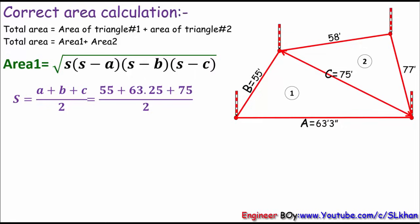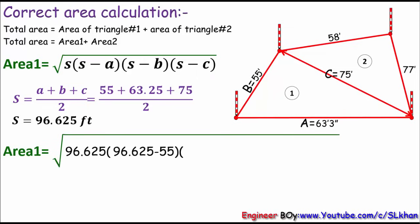Now let's put all the values in the Hero formula. Area equals square root of s, which is 96.625, times s minus one side, which is 55, times s minus the other side, which is 63.25, times s minus the last side, which is 75 feet. If you use your calculator, you should end up with area equals 1703.768 square feet.